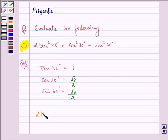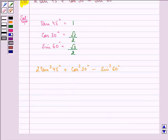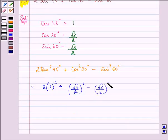We need to evaluate 2 tan square 45 degree plus cos square 30 degree minus sin square 60 degree, which is equal to 2 into 1 square plus root 3 by 2 square minus root 3 by 2 square. These will get cancelled out. We are left with 2 into square of 1, which is 1, and the answer to the question is 2.